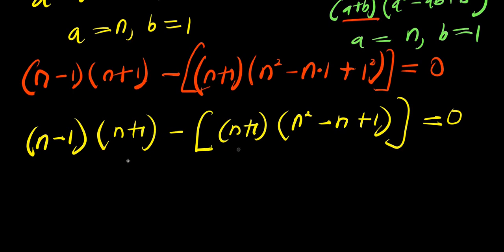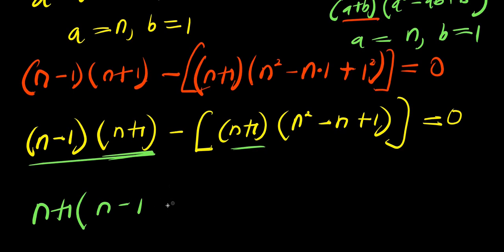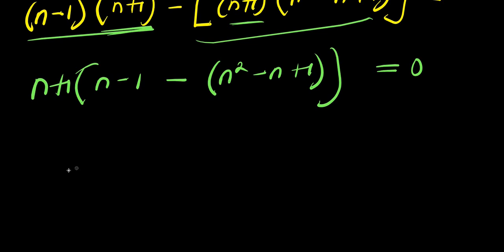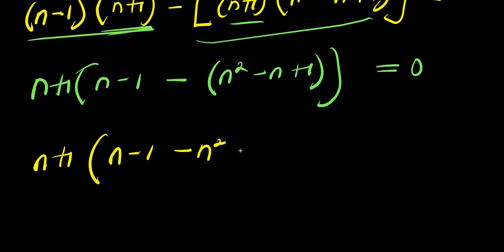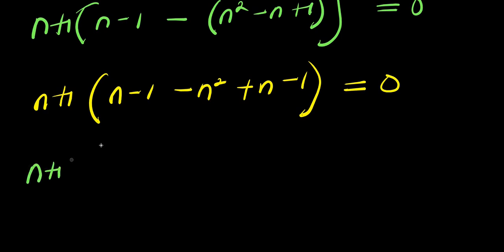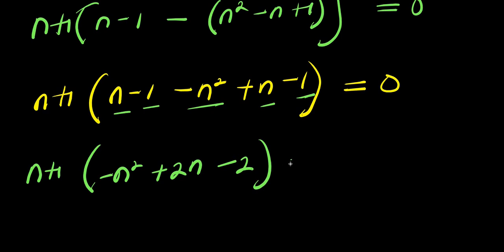At this point we can factor out (n plus 1), since it appears in both terms. Dividing through by (n plus 1), the first part gives (n minus 1) and the second part gives minus (n squared minus n plus 1). Expanding and combining like terms inside the bracket gives (n plus 1) times (minus n squared plus 2n minus 2) equals 0.